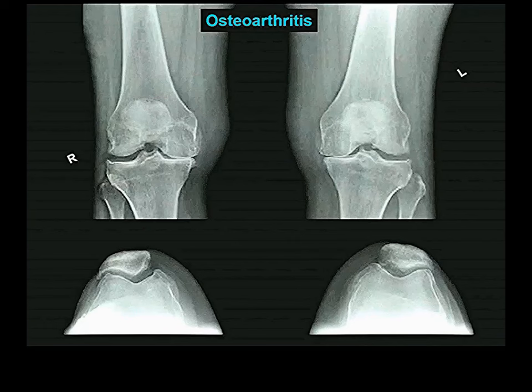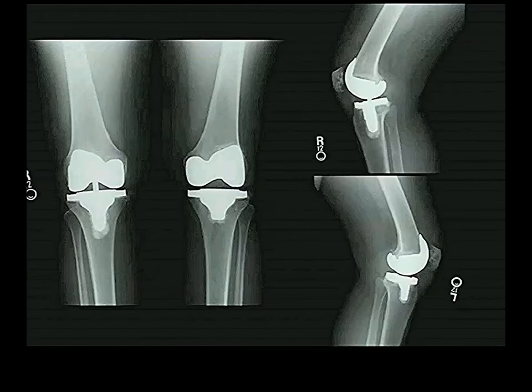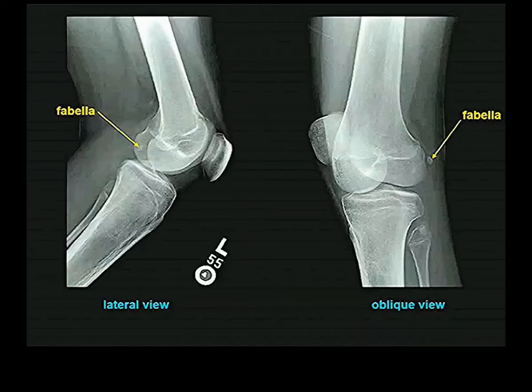Here: nice cartilage in the zone between the lateral femoral condyle and lateral tibial condyle, but no cartilage between the medial femoral and medial tibial condyles on either side. This person has bad osteoarthritis of the knees affecting the medial condyles on both sides. Treatment involves chopping off the bottom part of the femur and top part of the tibia and replacing them with metal and plastic.